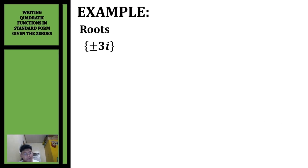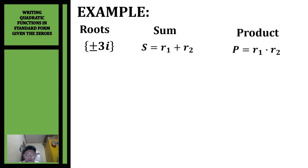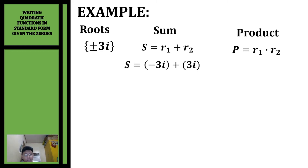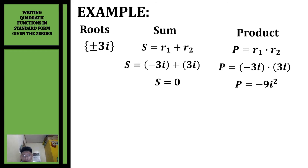Let's have another example. We're going to write the quadratic function given the roots positive/negative 3i — imaginary roots. We still apply the same procedure. We have positive 3i and negative 3i. Getting the sum: negative 3i plus 3i, applying combining like terms, the sum equals zero. For the product: negative 3i times 3i gives negative 3 times 3 = 9, and i times i = i squared, so the product is negative 9i squared.